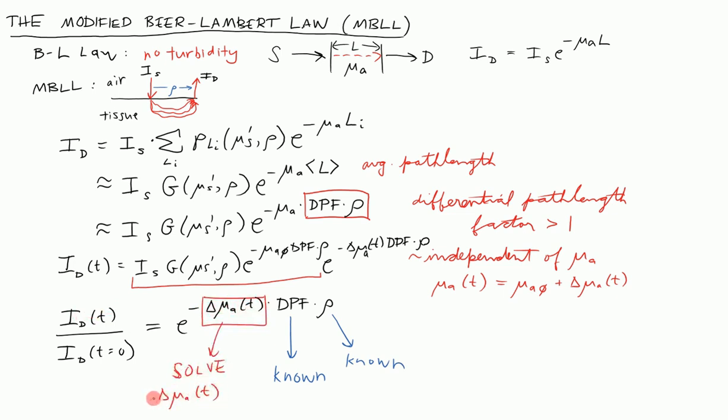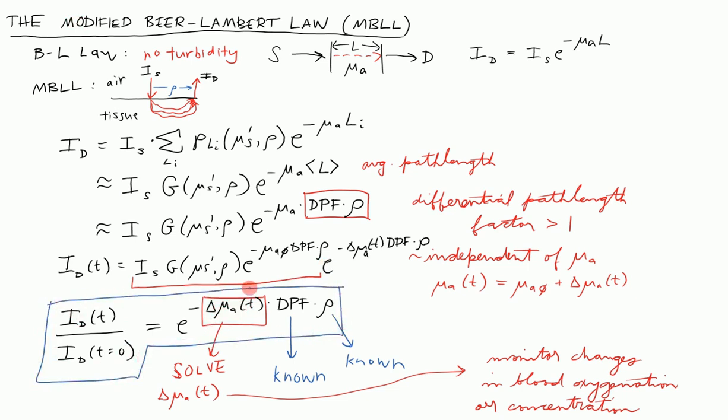Delta mu_A of t is something we're interested in. It could be the variation in the amount of blood in a region of tissue due to the pulsations of your heart or due to the activity of your brain. This allows us to monitor changes in, for instance, blood oxygenation or concentration. We'll discuss the limitations of this model in class, just to emphasize that it only detects relative changes in blood concentrations. The modified Beer-Lambert law is not sensitive to absolute amounts of blood, but it does do a good job of detecting temporal changes. This equation is what is called the modified Beer-Lambert law.